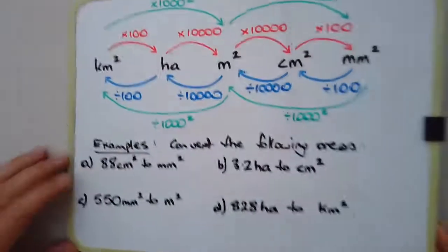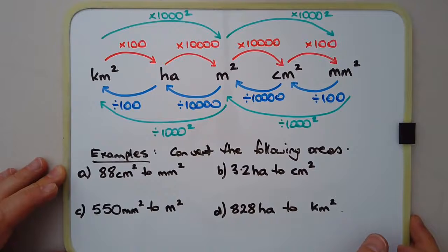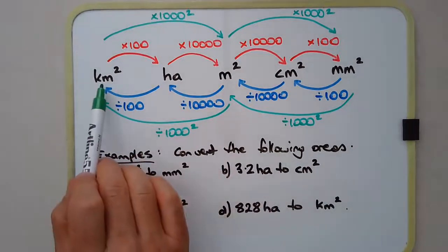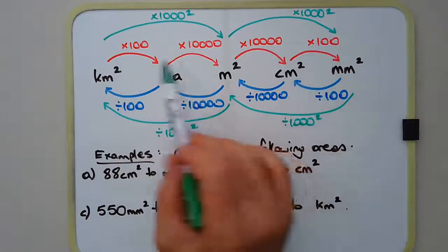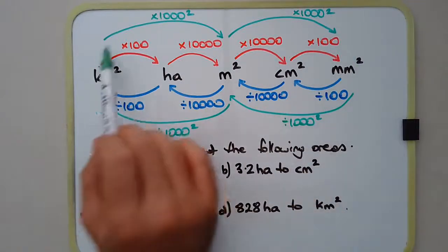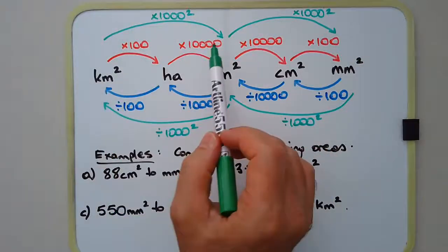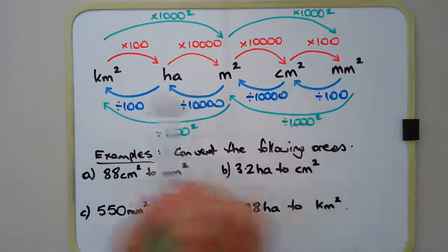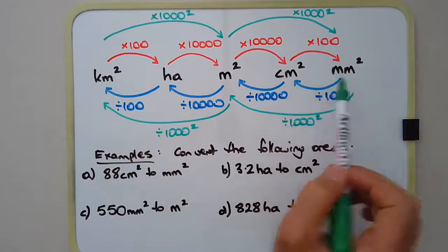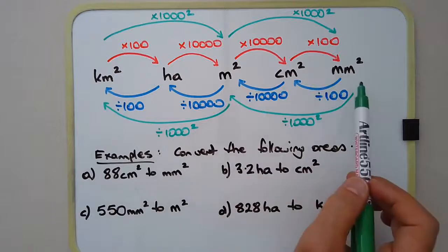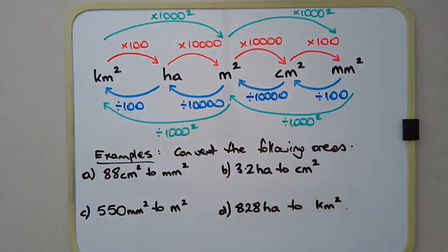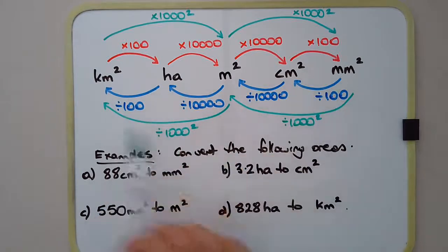There's also a conversion diagram you can use. Going from left to right following the red arrows means multiplication; going from right to left means division. The green arrows let you skip units — for example, going directly from square kilometres to square metres to square millimetres without passing through hectares or square centimetres. It looks quite similar to the metric unit conversions for length.